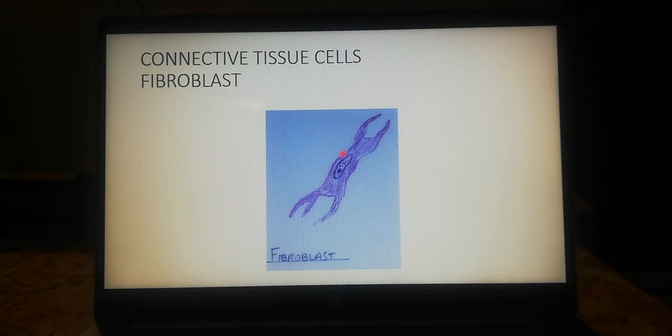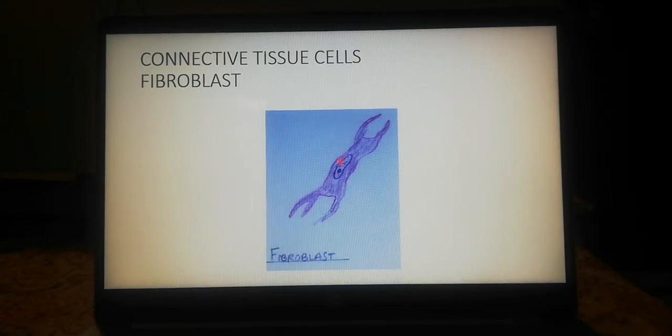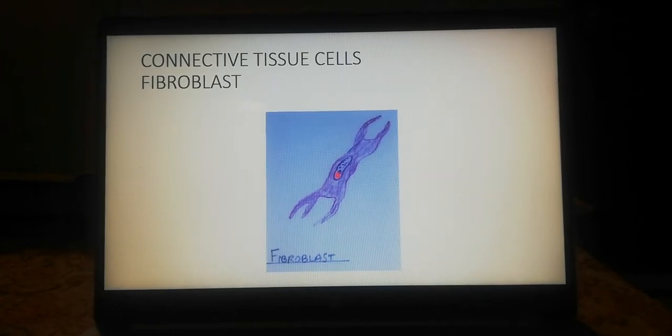The fibroblast is the active fibroblast. It is usually larger, spindle-shaped, and may show slender radiating processes. It has a large ovoid nucleus which contains a prominent nucleolus, and its cytoplasm stains deeply basophilic.